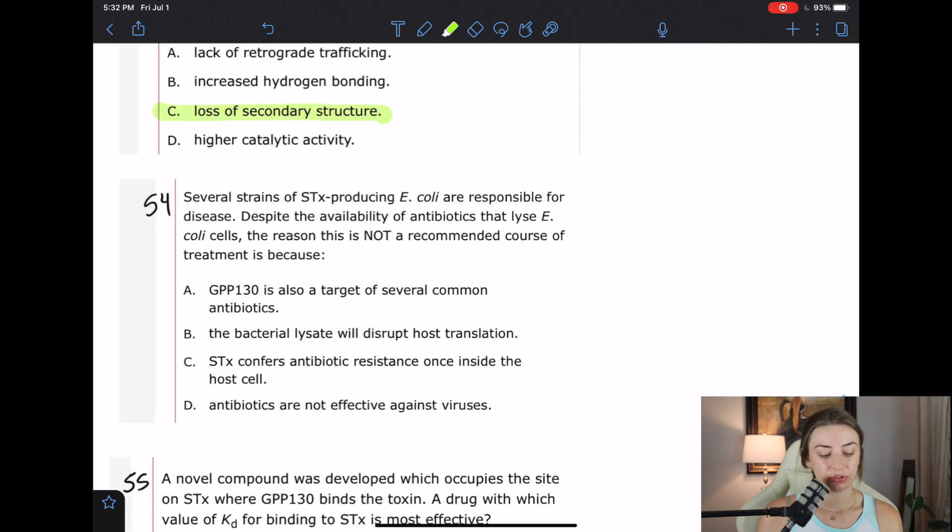Question 54 says several strains of Shiga toxin producing E. coli are responsible for disease. Despite the availability of antibiotics that lyse E. coli cells, the reason this is not a recommended course of treatment is because, this is going to be one of those logic and reasoning. I probably after reading this, I like to think about what I want the answer to be. But in this case, I have no clue. Like, just give me some answer choices and I'm going to pick the most logical one.